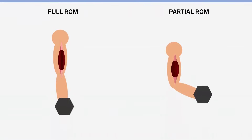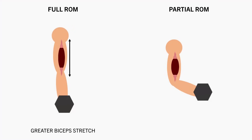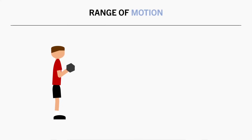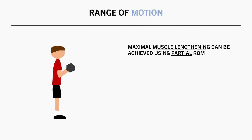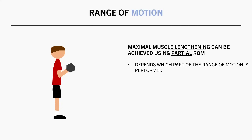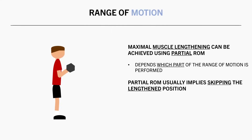As a simple example, going further down during a bicep curl will stretch the biceps to a greater extent, whereas if we cut range of motion short, the biceps won't reach the same level of stretch. However, this isn't always the case — we are still able to maximally lengthen a muscle using partial range of motion. It depends on what part of the movement the partial range of motion is performed. In most cases, we think of partial range as skipping the lengthened range, like the example we previously mentioned.